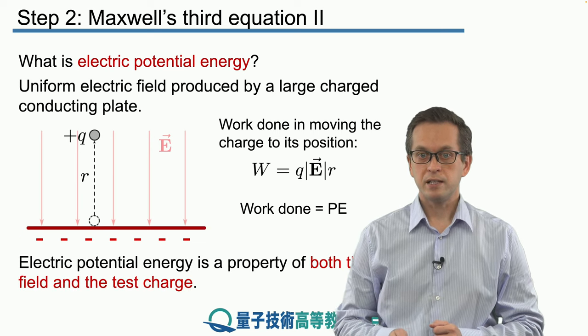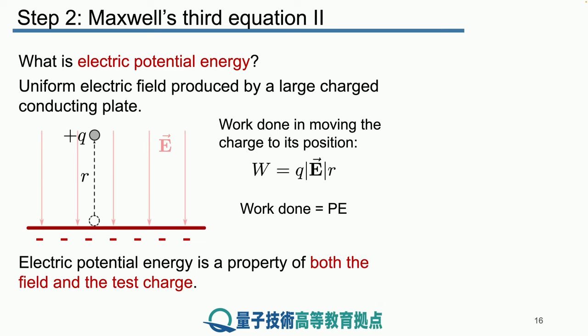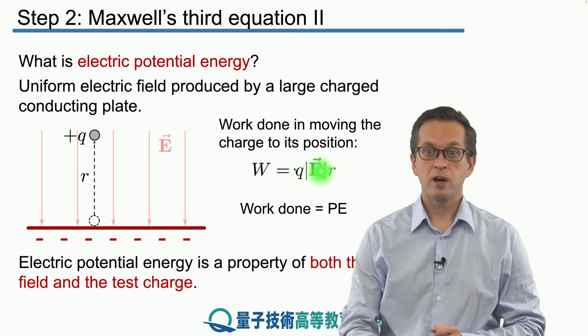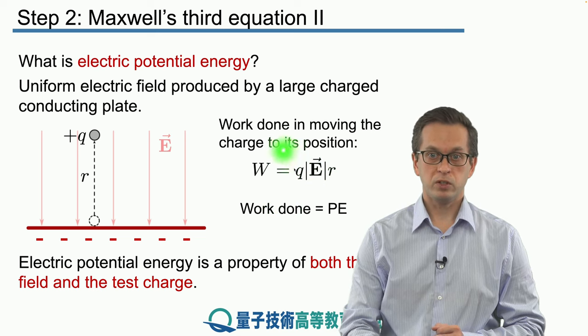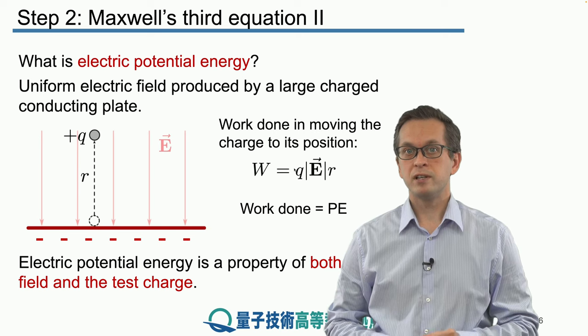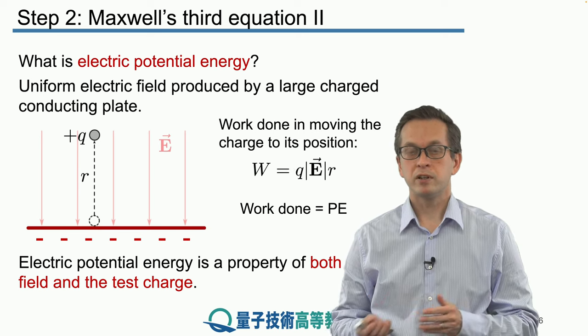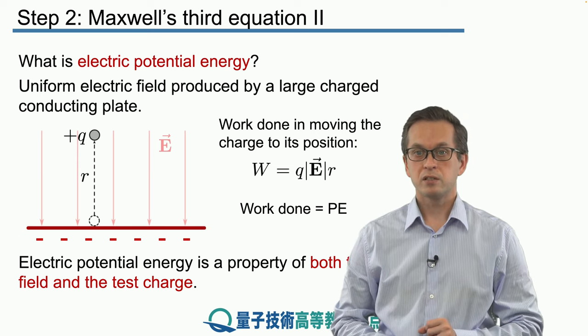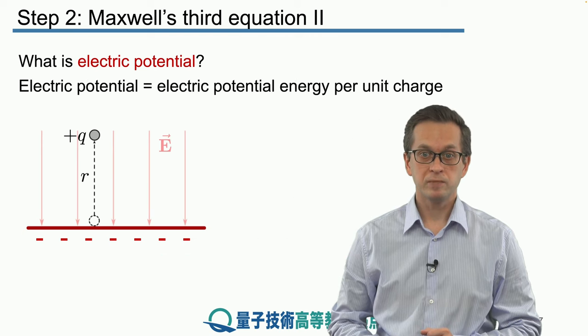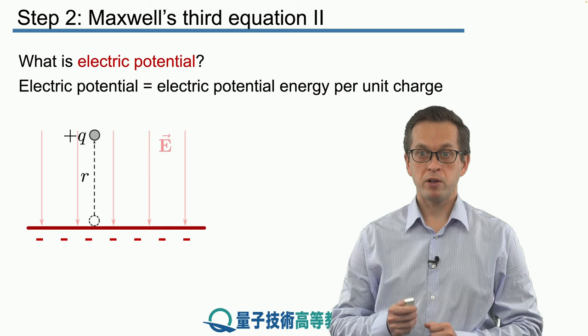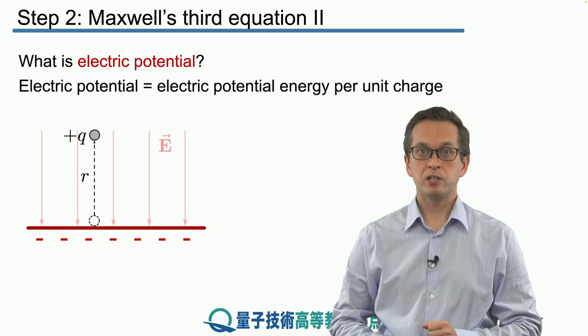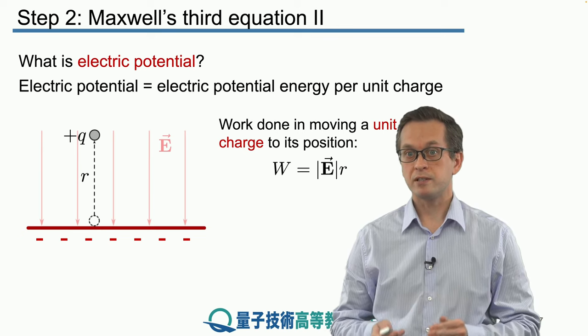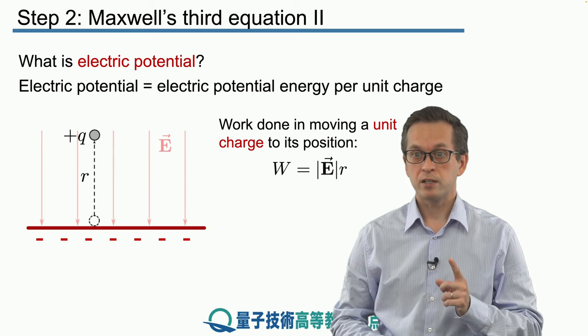But the thing is that this electric potential energy is a function of both the field and the test charge itself. You can see it in this expression right here. It depends both on the magnitude of the field and the magnitude of the charge. So many times we are only interested in the properties of the field. We don't want to have different expressions for this electric potential energy when we are putting different charges in the field. So what we do is we can define the electric potential as the electric potential energy per unit charge. So really what we do is we just take our potential energy and divide it by the charge, or we say that we are considering the scenario where we have a test charge of q equals 1.